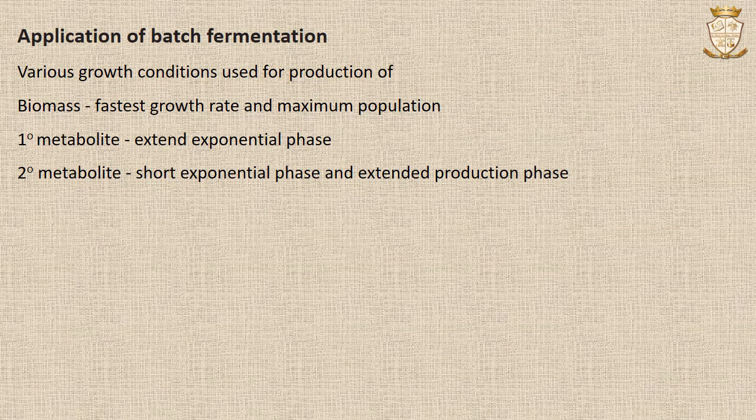What are the applications of batch fermentation? Batch fermentation may be used to produce biomass, primary metabolites, and secondary metabolites. For biomass production, cultural conditions supporting the fastest growth rate and maximum population should be used. For primary metabolite production, conditions to extend the exponential phase are used. For secondary metabolite production, conditions giving a short exponential phase and an extended production phase will be used.